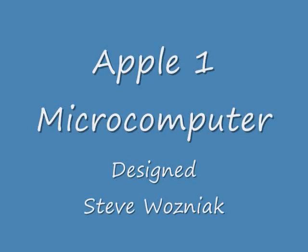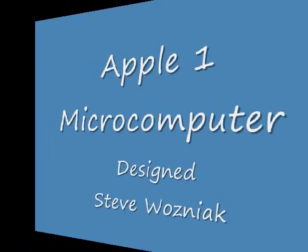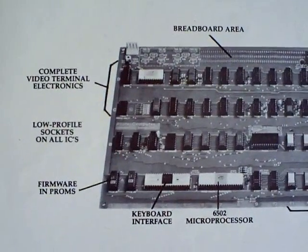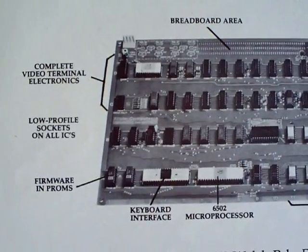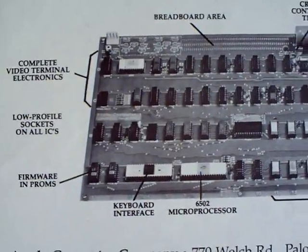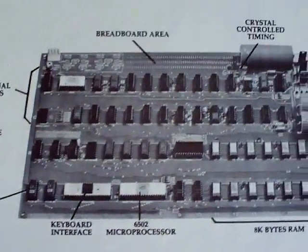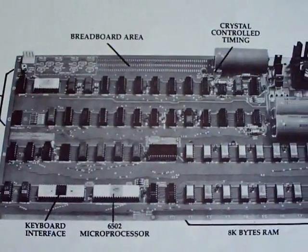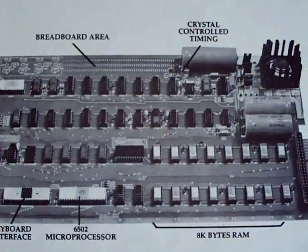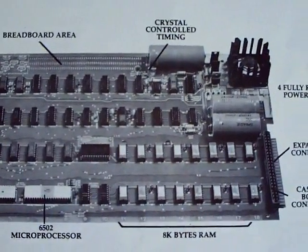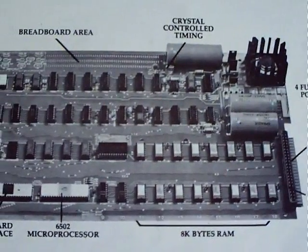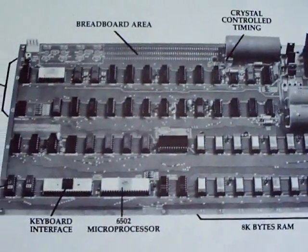The Apple One Microcomputer, 1976. The Apple One computer, designed by Steve Wozniak, was a one-board computer using the 6502 microprocessor chip. It came on the market in 1976.